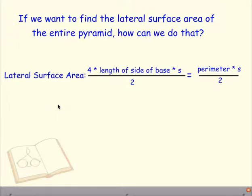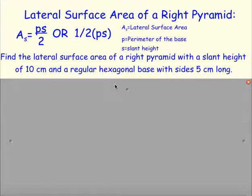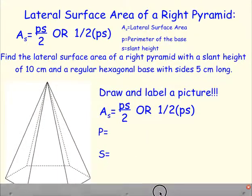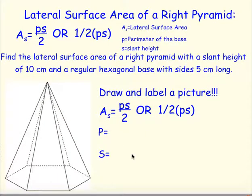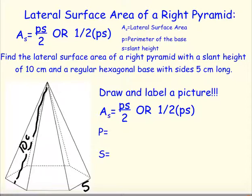The lateral surface area of a pyramid is the perimeter of the base times the slant height divided by 2. So let's find the lateral surface area of this right pyramid. We have a pyramid with a hexagonal bottom. My pyramid has side lengths of 5 centimeters on each side and a slant height of 10 centimeters along one of these sides.